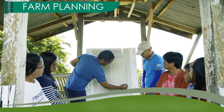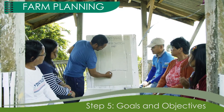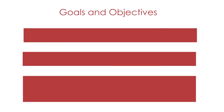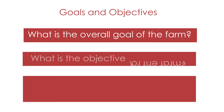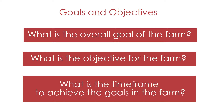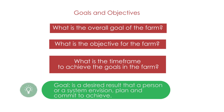Step 5: Goals and objectives. This is an important step in target setting. What is the overall goal for the farm? What is the objective for the farm? What is the time frame to achieve the goals on the farm? A goal is a desired result that a person or a system envisions, plans, and commits to achieve.